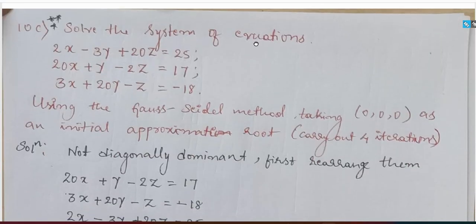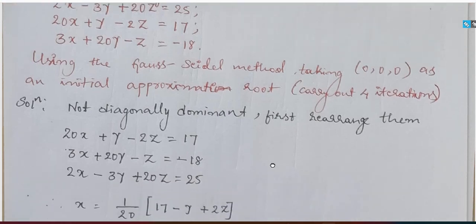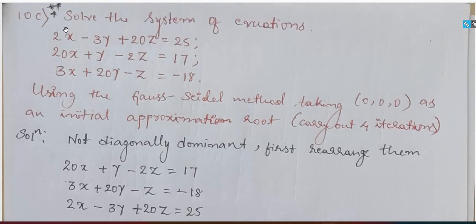Moving on to question number 10c: solve the system of equations using the Gauss-Seidel method taking (0, 0, 0) as the initial approximation. The given system of equations is not diagonally dominant, so first we shall rearrange the system. Looking at the column values, whichever column has the largest value, take that equation first. The second equation has the largest value: 20x plus y minus 2z equals 17, so it becomes the first equation.